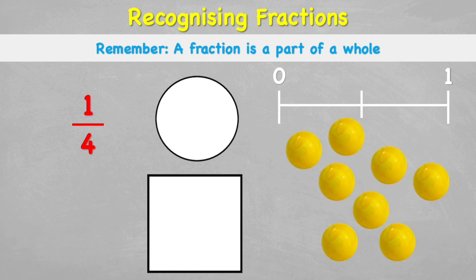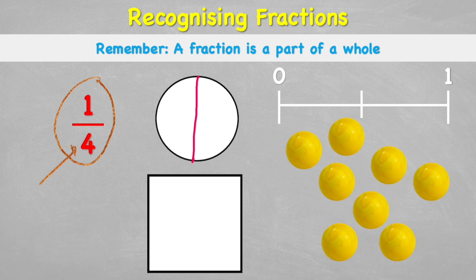The denominator — the number at the bottom — tells us how many to split the whole into, so we split our whole apple into four. Then the numerator — the number on top — tells us how many we have, and we have one quarter: one little section.